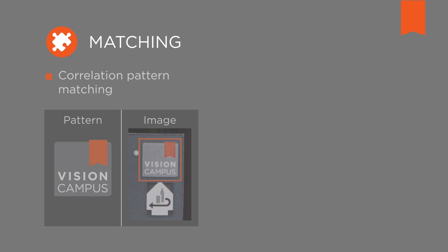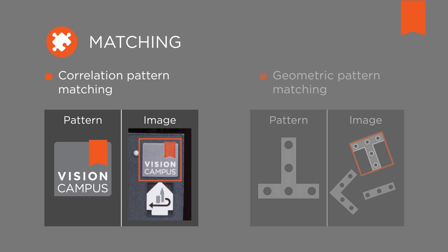Now let's have a closer look at image processing. When it comes to locating parts, usually matching is involved — looking for regions that are similar to or the same as a predefined template. This template can either be an image or a geometric pattern containing information regarding edges and geometric features. These methods are called correlation pattern matching and geometric pattern matching respectively.